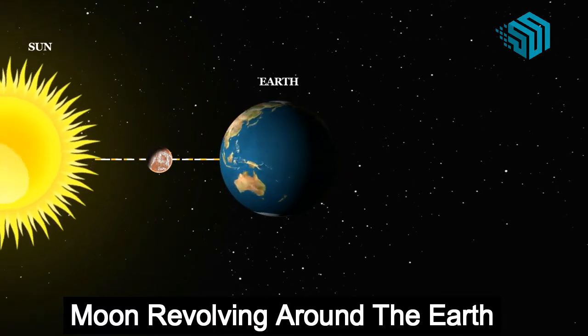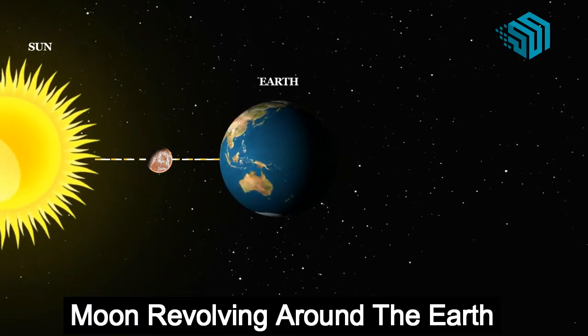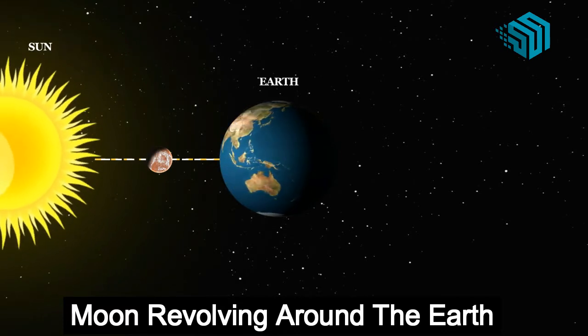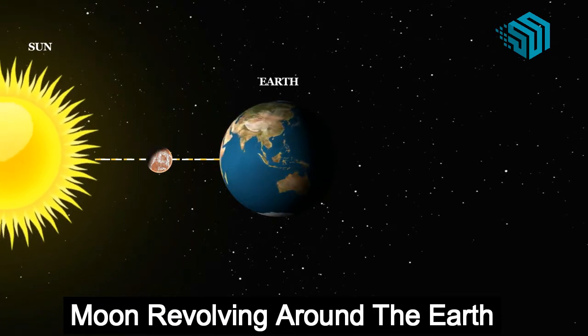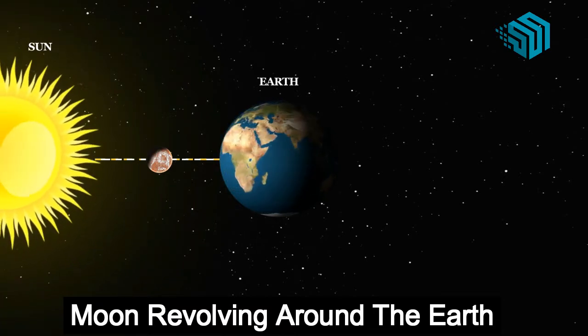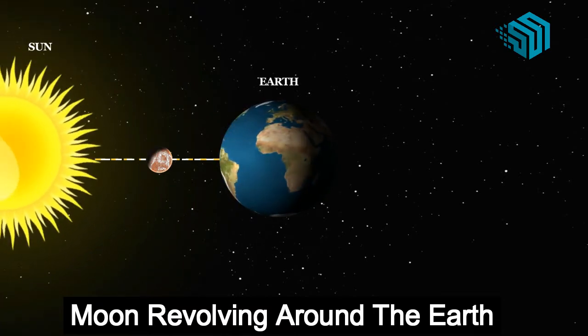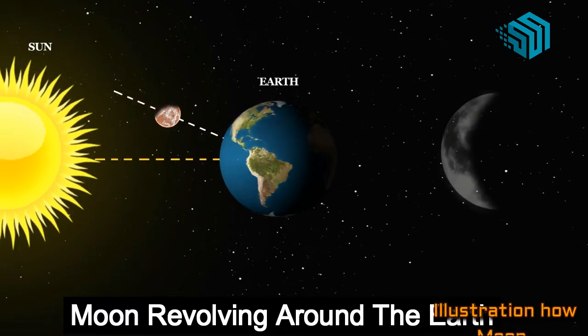So let's learn about faces of the moon. The moon goes through faces because number one, the moon is revolving around the earth. Number two, the moon is reflecting sunlight towards the earth.